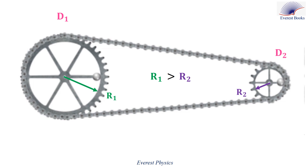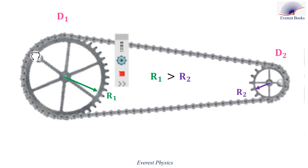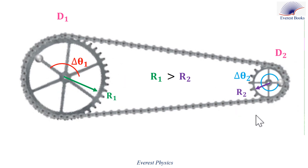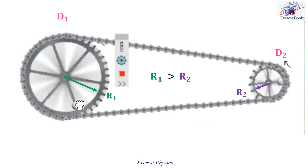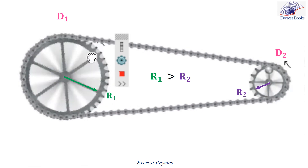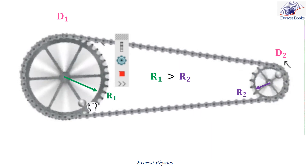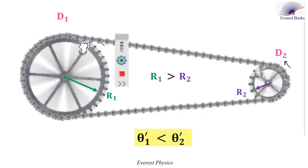Watch this animation to prove that theta 1 prime is less than theta 2 prime. Look at these two points. As disk D1 performs an angle less than pi radians, then disk D2 performs an angle of 2 pi radians. That means theta 1 prime is less than theta 2 prime. We can conclude that the number of rotations performed by disk D2 is greater than that performed by disk D1, because theta 1 prime is less than theta 2 prime.